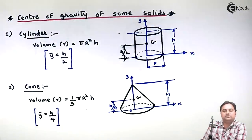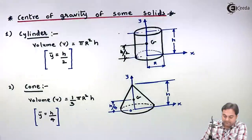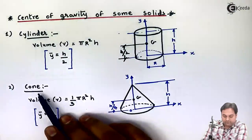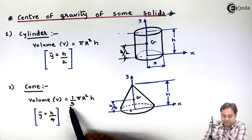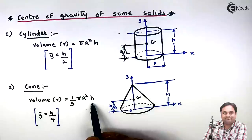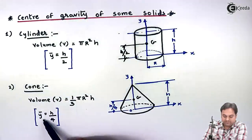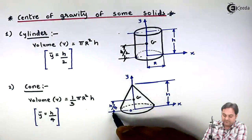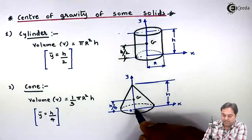Next let us see the location of center of gravity for a cone. For cone, the volume is 1/3 πR²H. ȳ is the location of CG from X axis and that location is H/4 distance from the X axis or from the bottom.